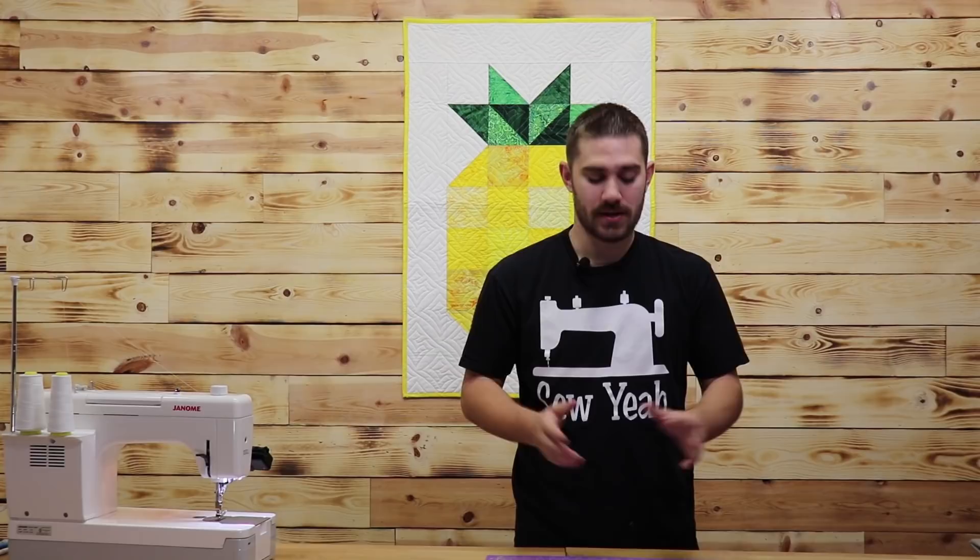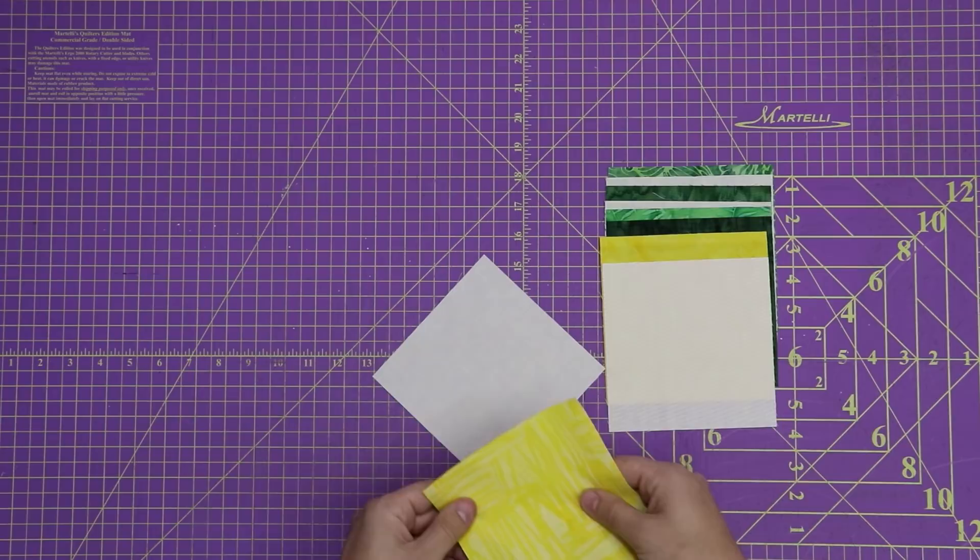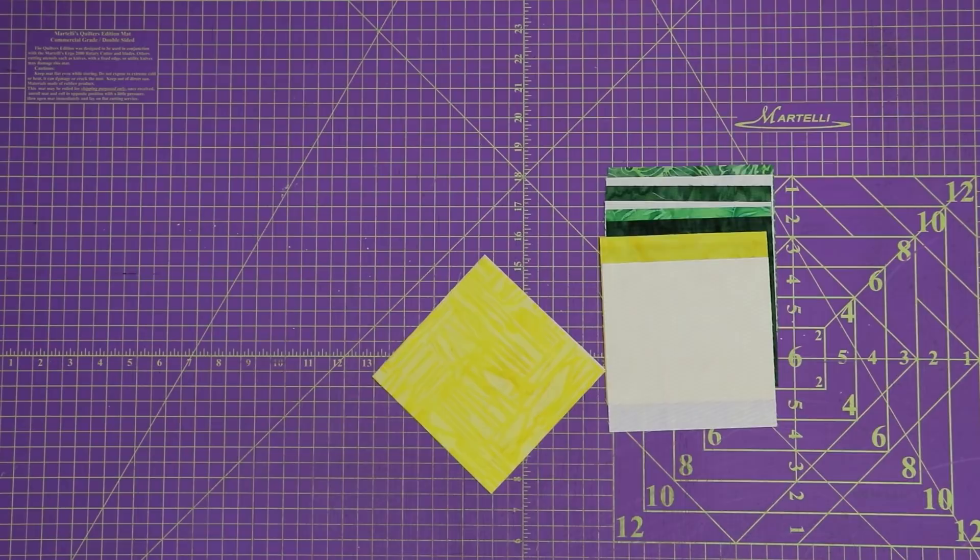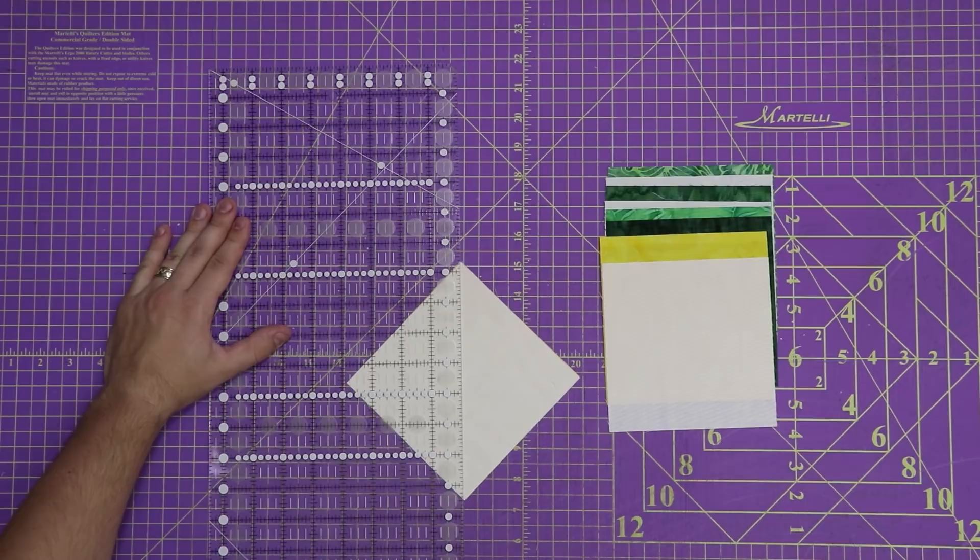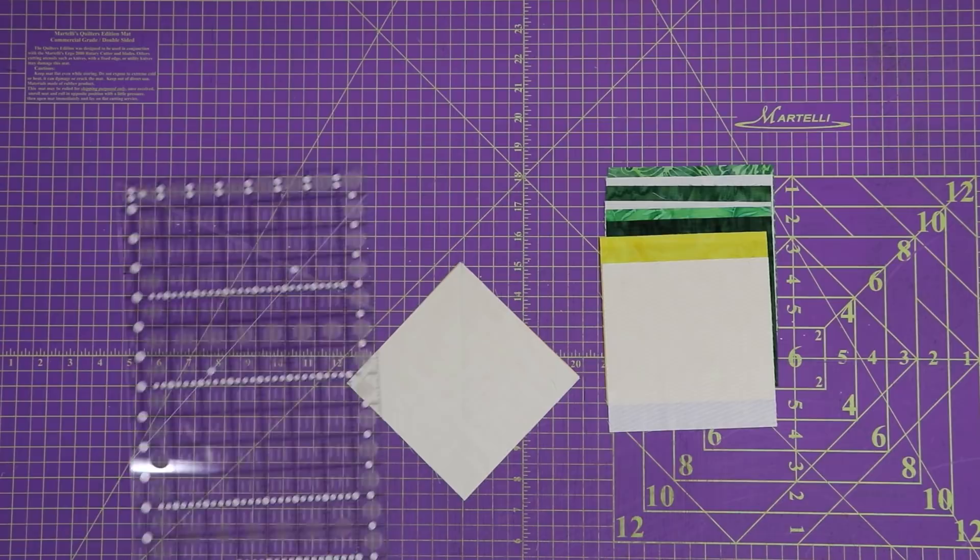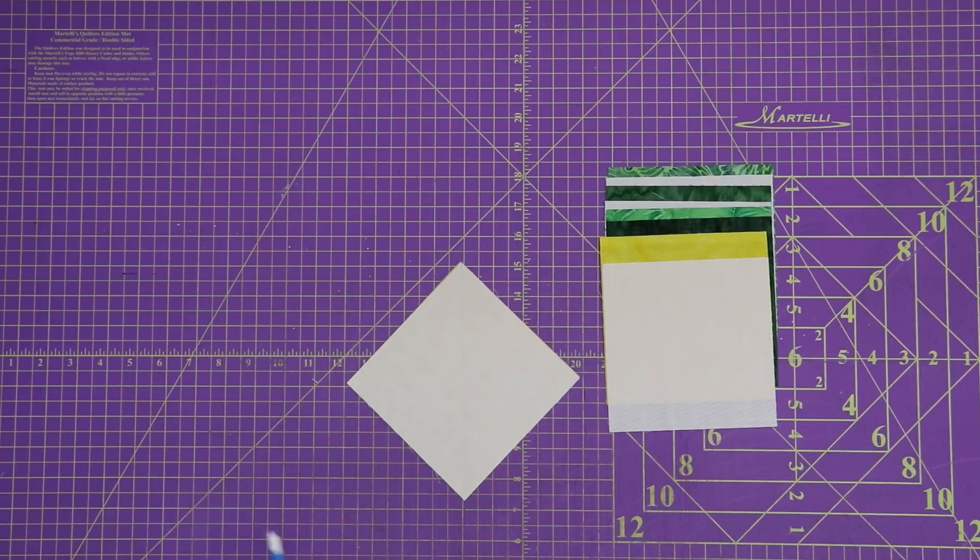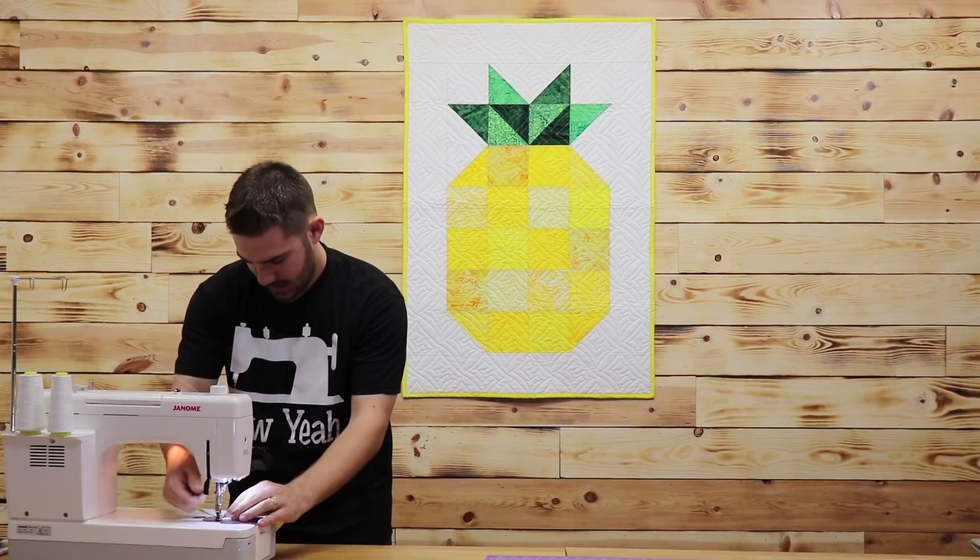The very first thing we're going to do is put them right sides together. I'm using some batiks here so there's not really a right or wrong side. What I'm going to do is mark a line on a diagonal here. That way I can have a reference point to sew my quarter inch seam. I am going to be sewing my quarter inch seam on both sides of the line.